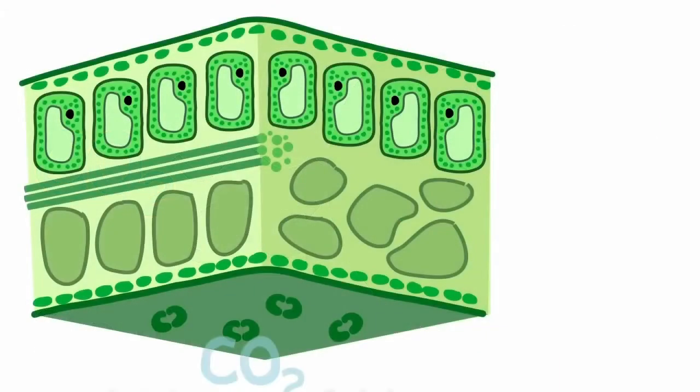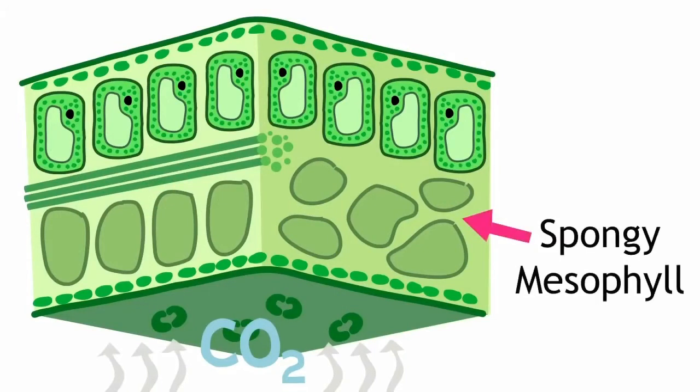So the carbon dioxide comes in through the stomata, makes its way through the gaps in an airy layer of cells called the spongy mesophyll at the bottom part of the leaf, and then heads up to the palisade layer for photosynthesis. Leaves are thin so that the carbon dioxide won't have too far to travel.